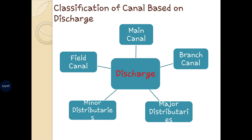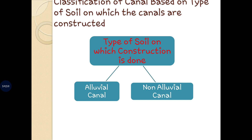The next classification is based on the soil on which the canal is to be constructed — that is, alluvial canal and non-alluvial canal. Alluvial canals are constructed on alluvial soil, which has very high production capacity and is very efficient for the farmers. Non-alluvial canals are constructed on non-alluvial soils like black cotton soil or red soil, which do not have that high yield, so the production capacity from these canals is very less.